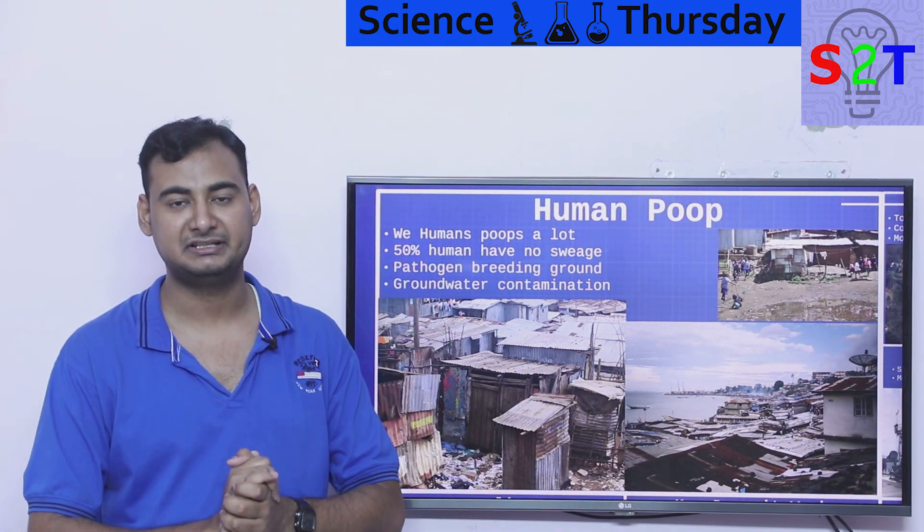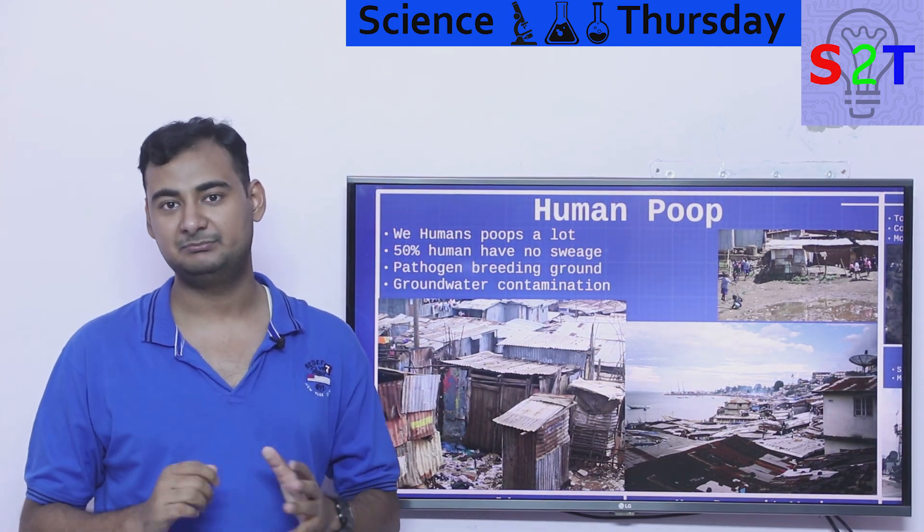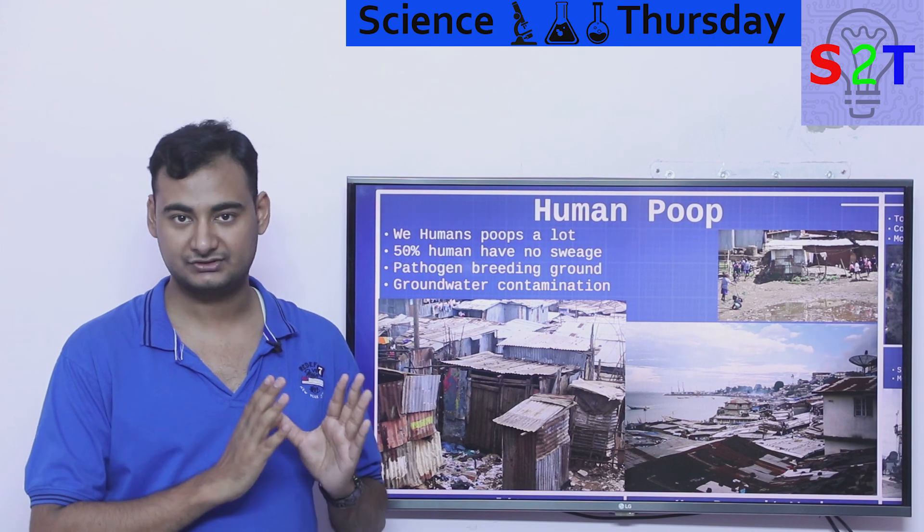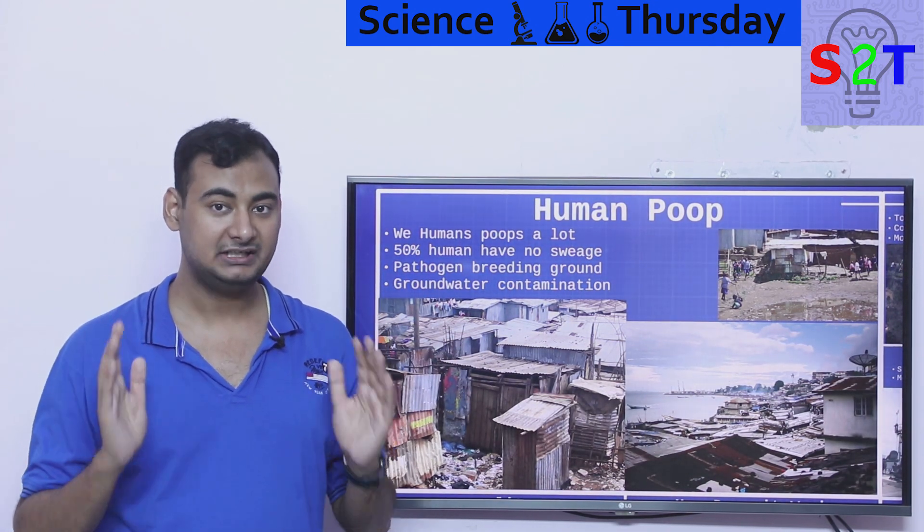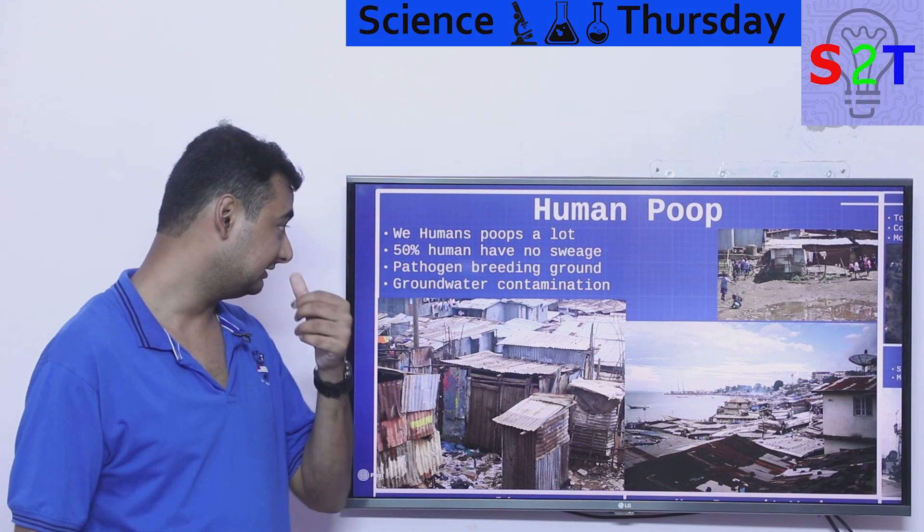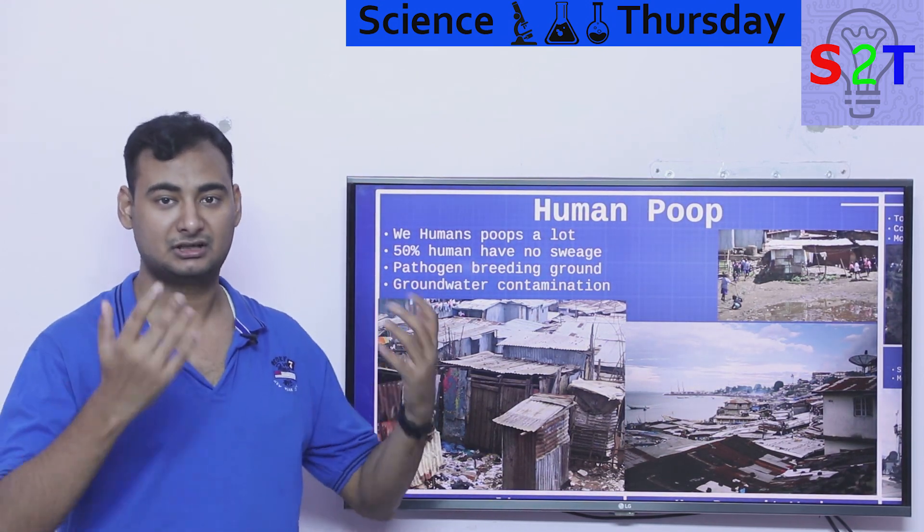For easy numbers, say if there are 10 billion humans on this planet, only 5 billion people have good access to proper sewage systems. That creates a problem because 5 billion people don't have a good sewage system. That's a very serious problem.